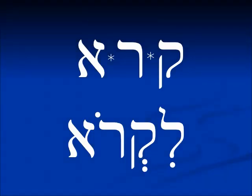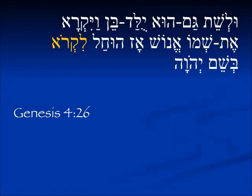Here is an example of a verb ending in Aleph, and we don't see any change really. We have the Chirik at the front, the Sheva under the first letter, and the Cholem Chaser: Likro, to call. A verse from Genesis 4:26 — L'Shet gam hu yulad ben, Vayikra et Shmo Enosh — Seth had a son and he called his name Enosh. Az hu chal l'kro b'shem Yehovah — from that time he began to call on the name of Yehovah.